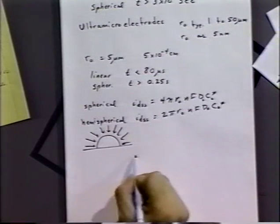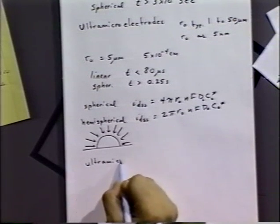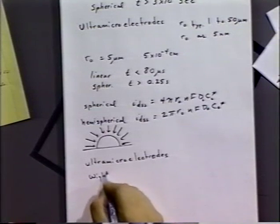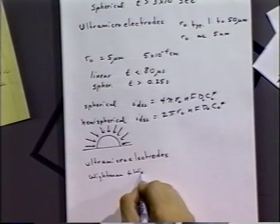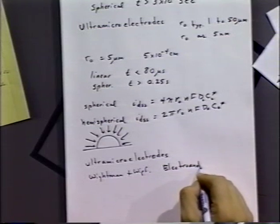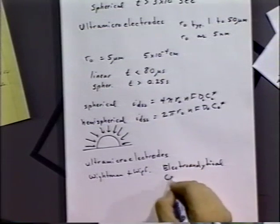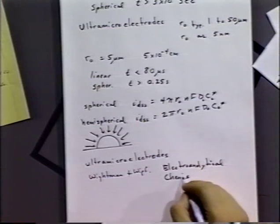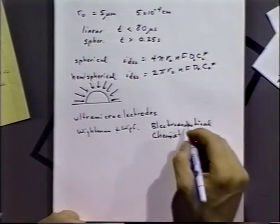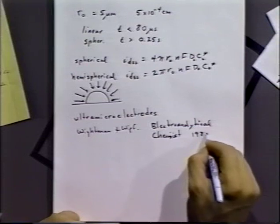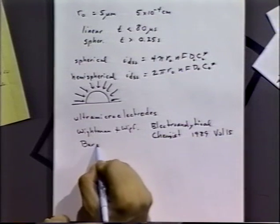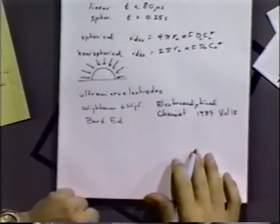If you want to read about ultramicroelectrodes, there is a reference in your notes written by Whiteman and Wythe in a volume of monographs called Electroanalytical Chemistry — a good book for topics of interest to electroanalytical and general electrochemists. That was written in 1989, volume 15, with A.J. Bard as editor, and it talks a lot about ultramicroelectrodes.